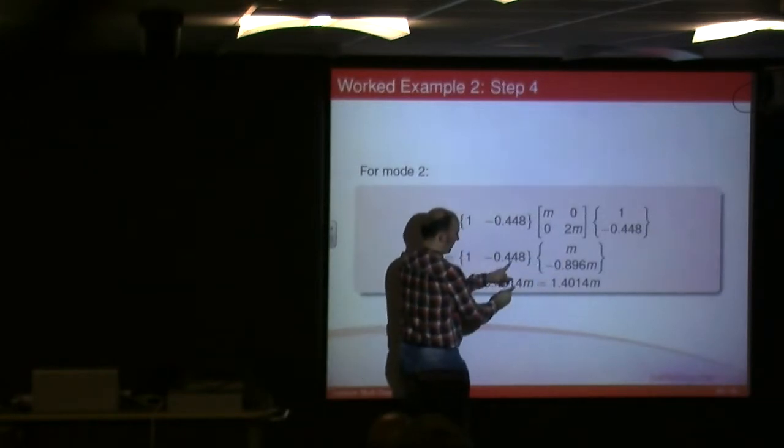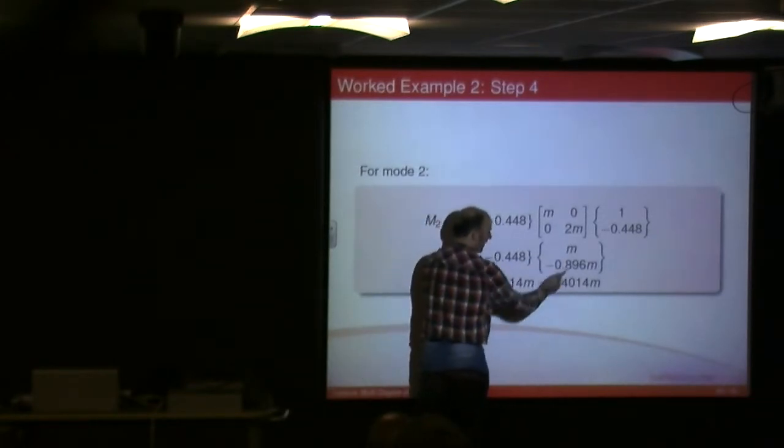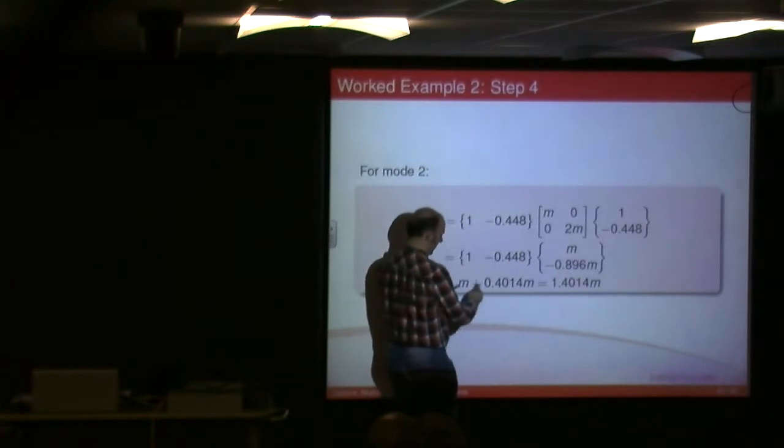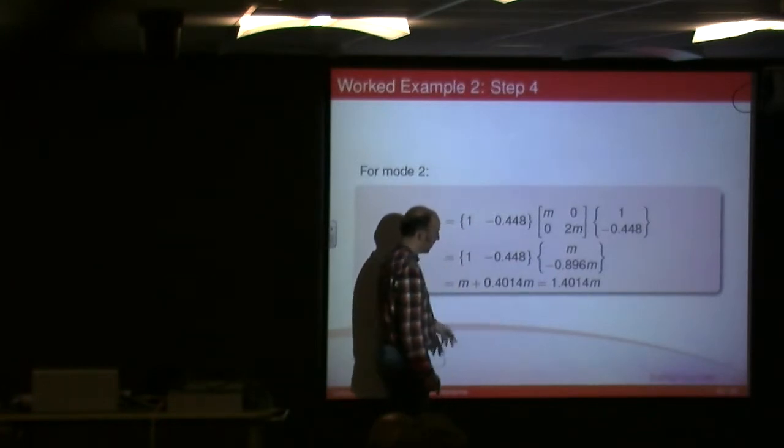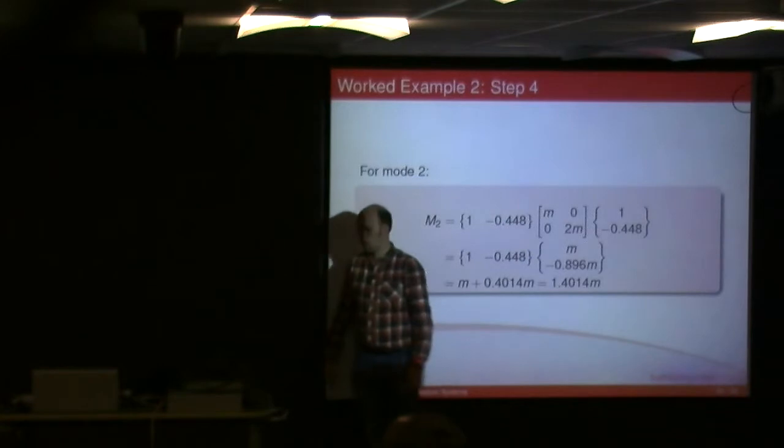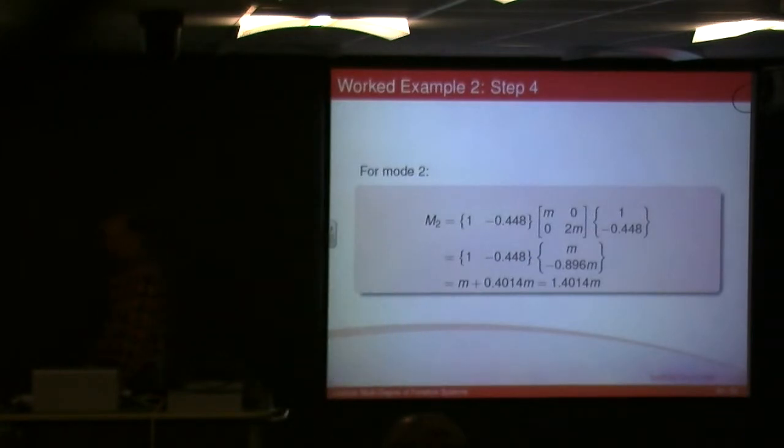1 times by m minus 0.448 times minus 0.896m, and I get m plus 0.401, I get 1.4014 times by m. That's my modal mass for the second mode.